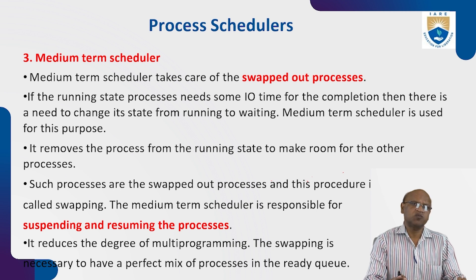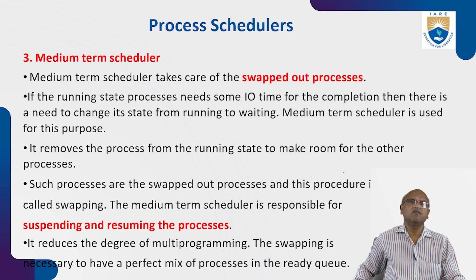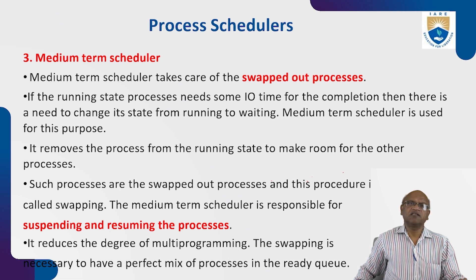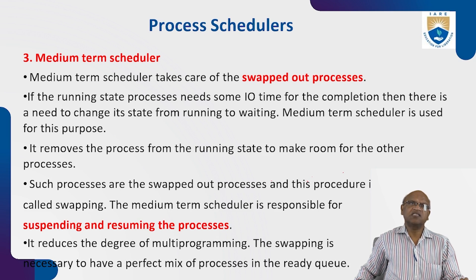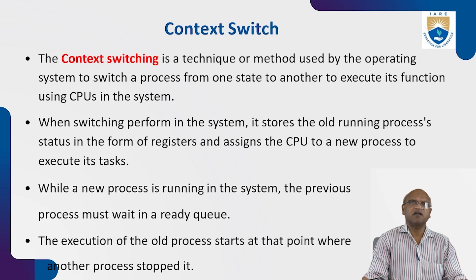Swapping is necessary to maintain a perfect mix of processes in the ready queue for smooth functioning and smooth execution of programs. The medium-term scheduler is very important. Suppose some interrupt occurs — whatever program is running in the microprocessor will be suspended, swapped out, and the high-priority job will be sent to the microprocessor for execution. All these things are the responsibility of the medium-term scheduler.